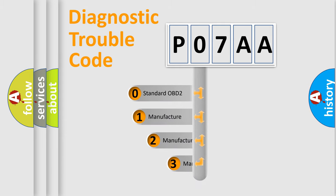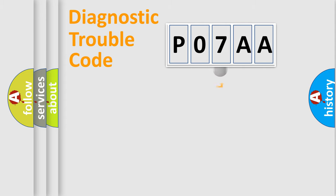If the second character is expressed as zero, it is a standardized error. In the case of numbers 1, 2, 3, it is a more precise expression of the car-specific error.